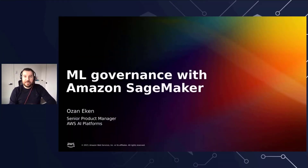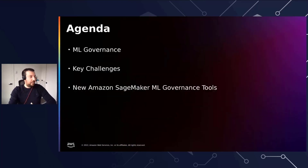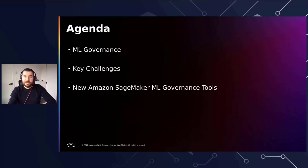Hi everyone. My name is Ozan. I'm a Senior Product Manager at AWS SageMaker. Today, I'm going to talk about a very important topic in the machine learning field, which is governance. According to a survey conducted by Algorithmia in 2021, 56% of respondents believe that model governance is one of the biggest challenges for successfully bringing ML applications into production. Today, we will go over some of these challenges, and I will introduce our new features that we launched at Re:Invent to address those challenges in the ML governance field.